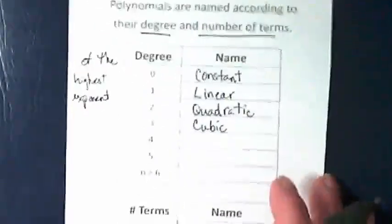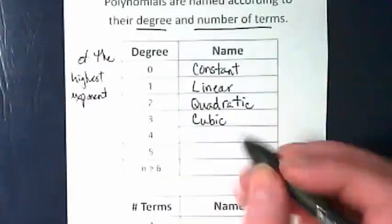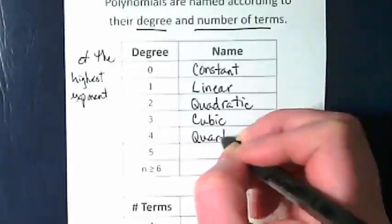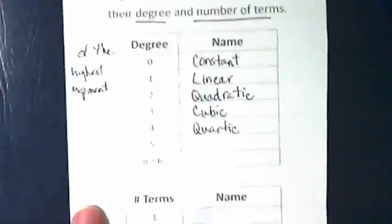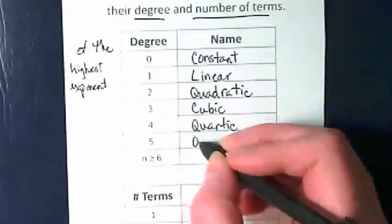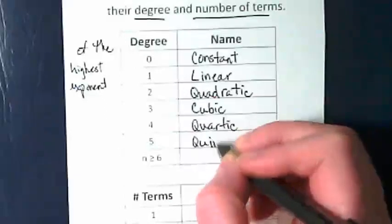Anybody want to guess what four is? Quartic. Five is quintic.